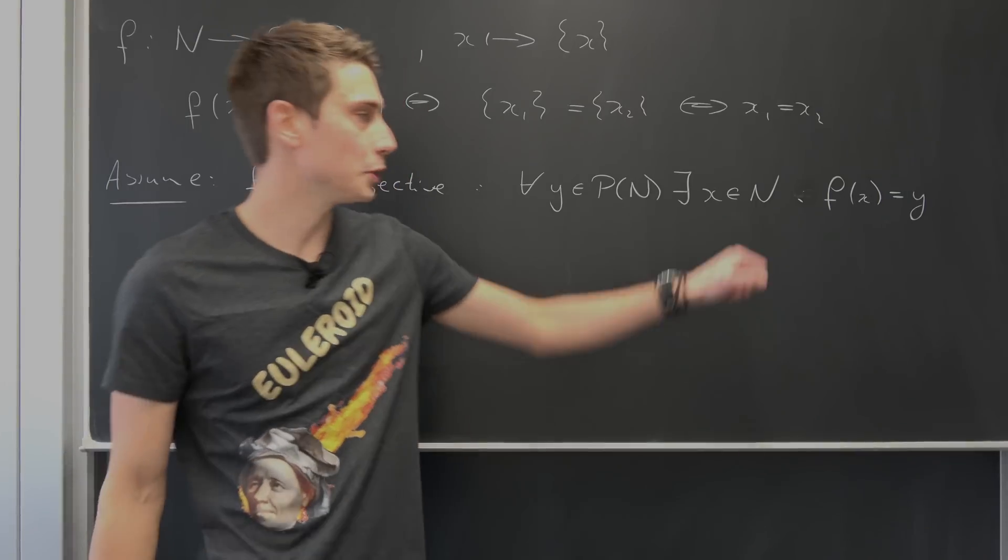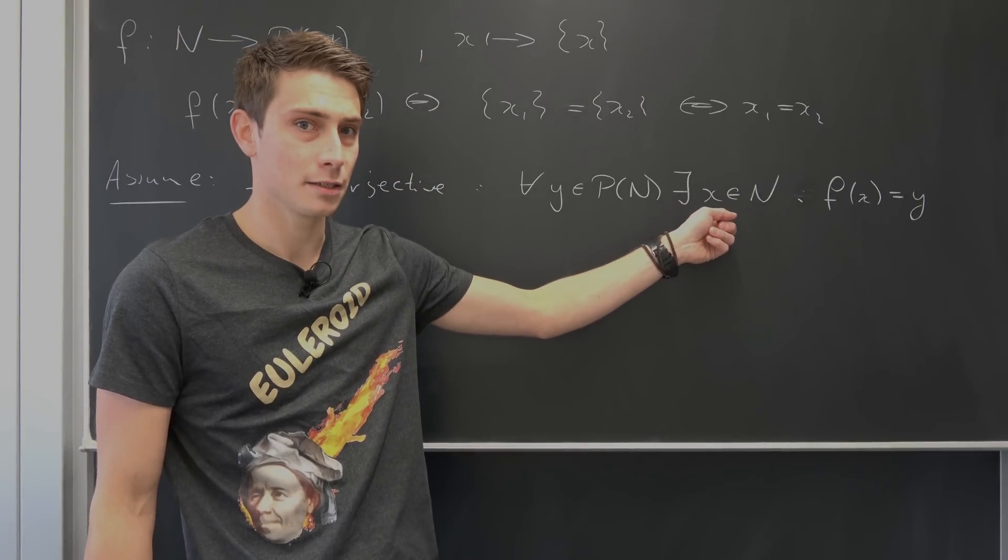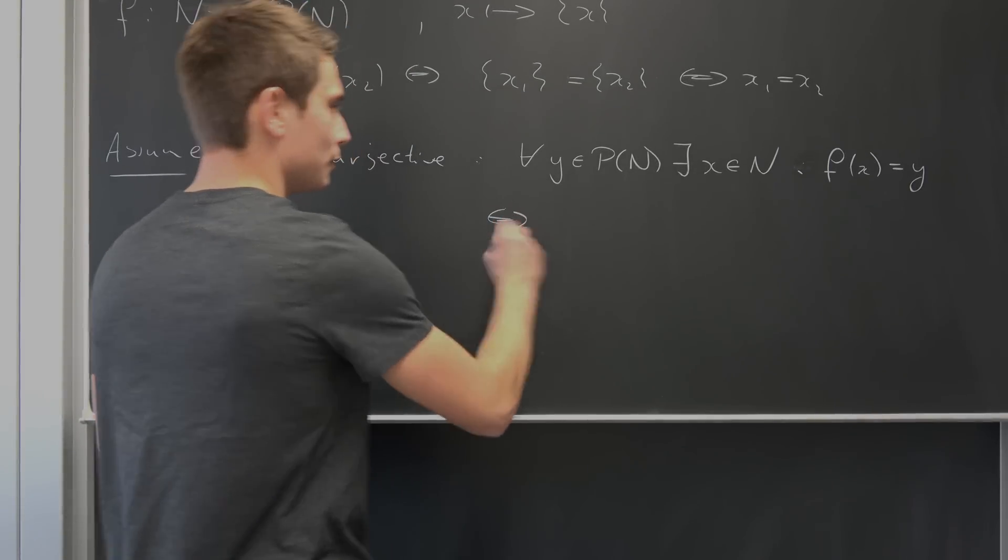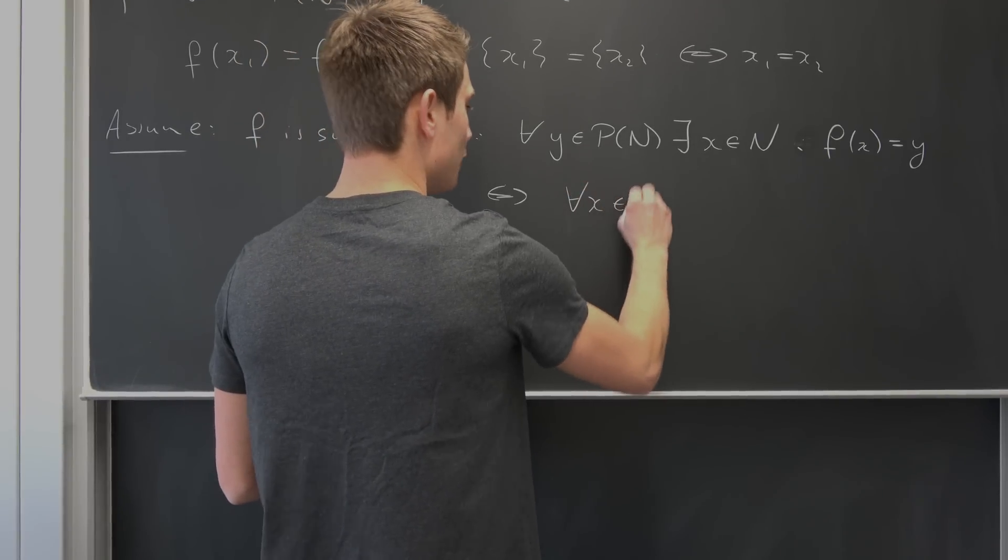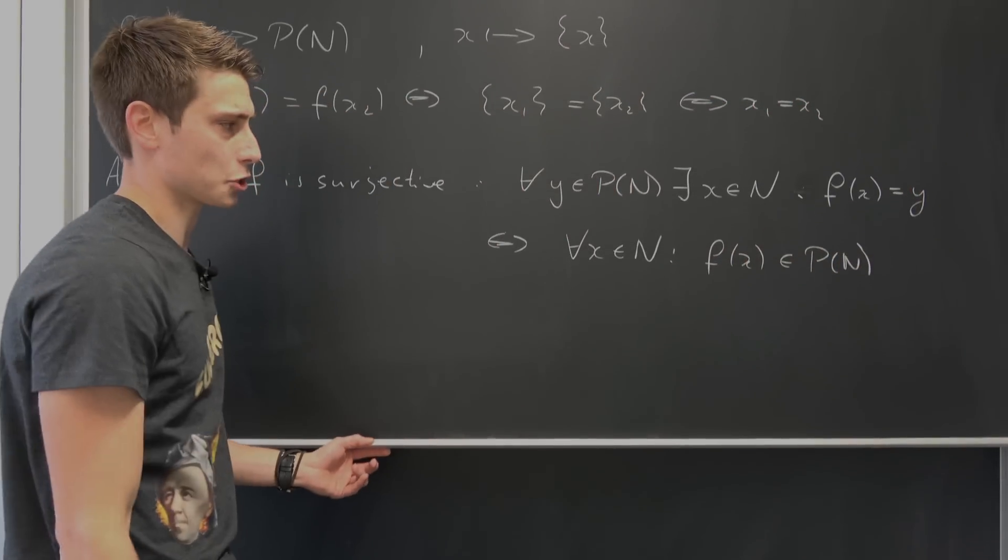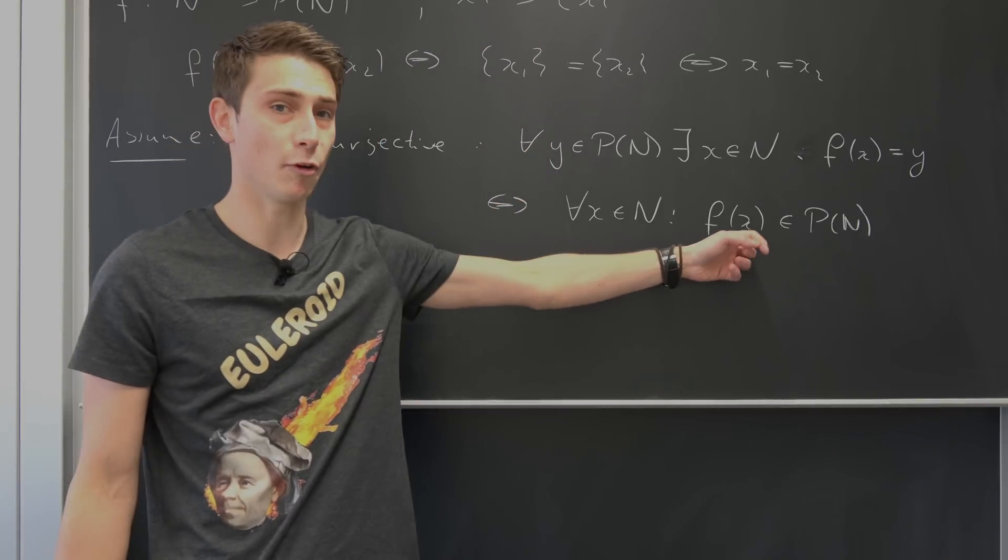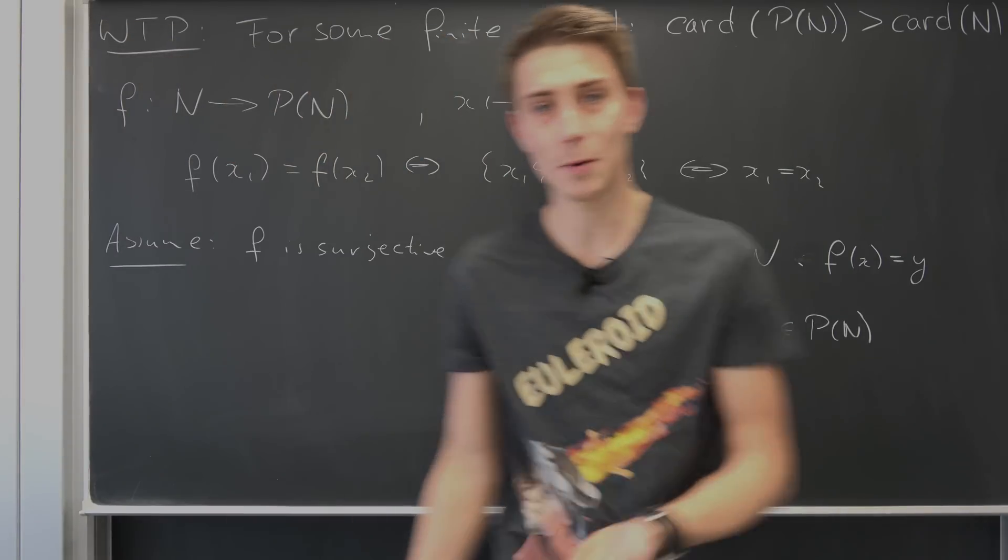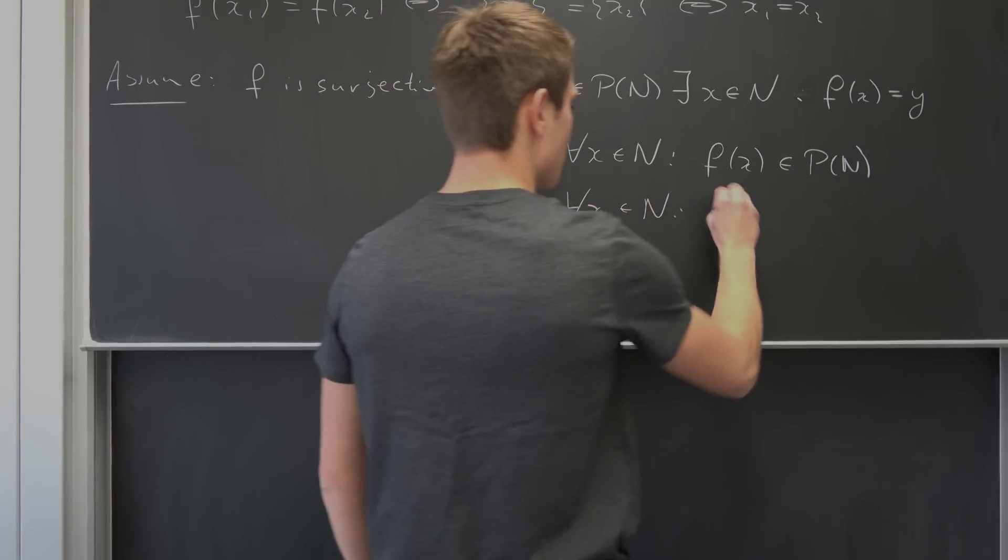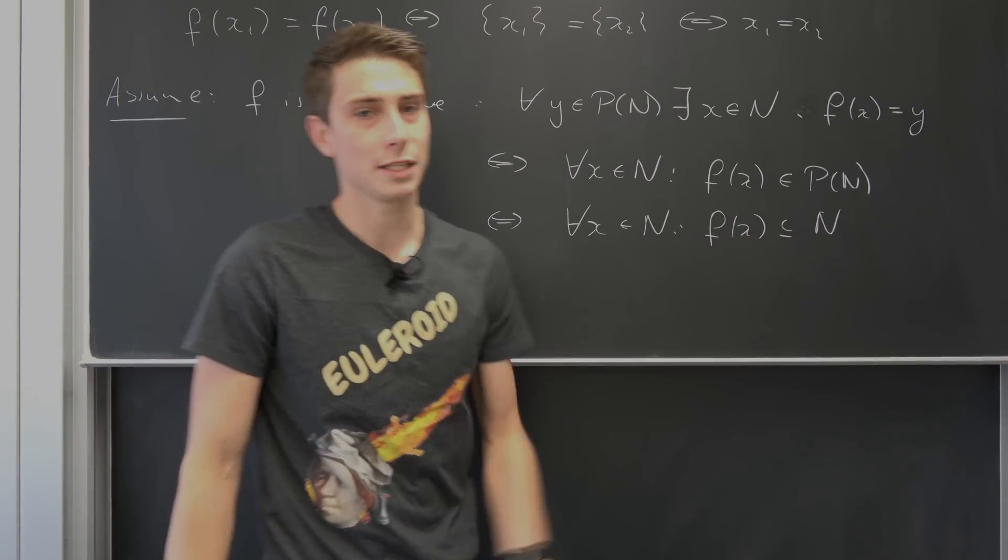What does that mean exactly? We can rewrite this a little bit because this just states that whatever x we take, the image of this x is always going to be in our power set. So this equivalently just means that for all x element of n, f of x is element of the power set of n. It does make sense actually. But what does it mean for something to be element of the power set? Well this just means that f of x is a subset of our n because the power set is just a set of all subsets. So for all x element of n we have that f of x is a subset of our n.